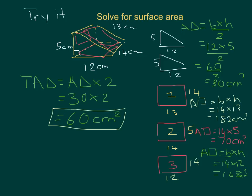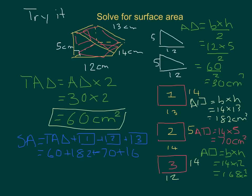Now you have the total area of the two triangles and all three rectangles. Surface area equals total area of triangles plus rectangle 1 plus rectangle 2 plus rectangle 3: 60 plus 182 plus 70 plus 168 equals a surface area total of 480 centimeters squared. Go through this, make sure you have it all correct, and if you do you're moving on.